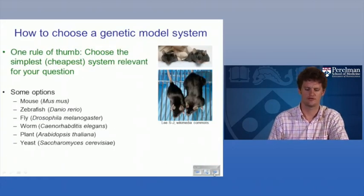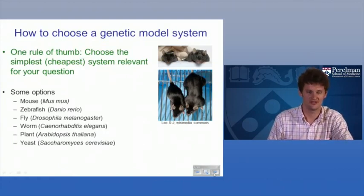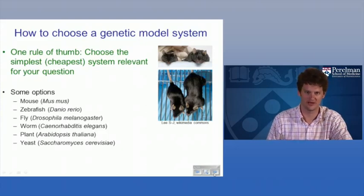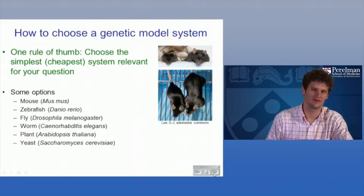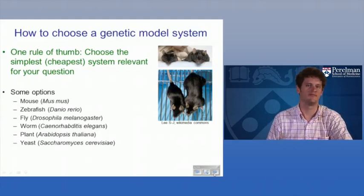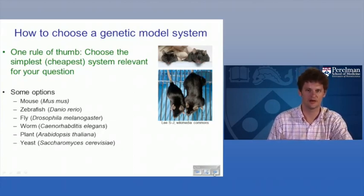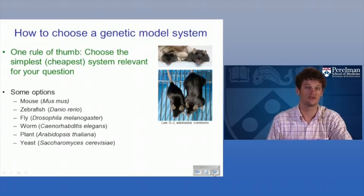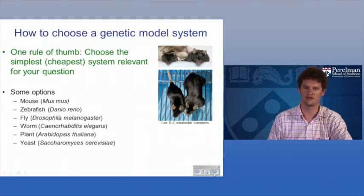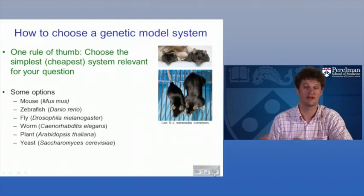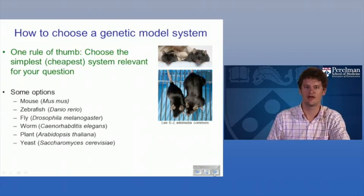It's important to choose the right system. You don't want to spend all your money — for example, if you're going to screen the basics of how the secretory pathway works, that was all worked out decades ago in yeast by Randy Schekman and others using genetic screens, where there's extremely powerful genetics. You can generate large collections and saturated mutagenesis to identify all genes with loss-of-function or gain-of-function phenotypes associated with that process.